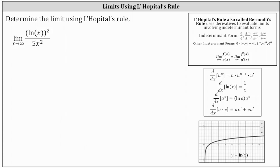We're asked to determine the limit using L'Hôpital's rule. Before we do this, let's begin by checking the form of the limit. For a quick review, I've graphed y equals natural log x here at the bottom. Remember, this function does continue increasing over its entire domain — it does not level off and have a horizontal asymptote. Therefore, as x approaches infinity, the square of natural log x approaches infinity, and so does 5x squared. The limit has the indeterminate form of infinity divided by infinity, and therefore we can apply L'Hôpital's rule.